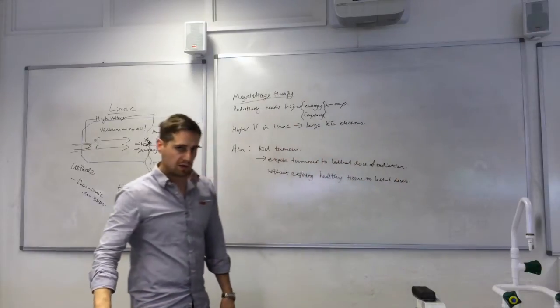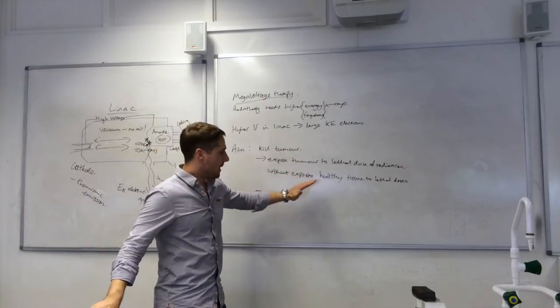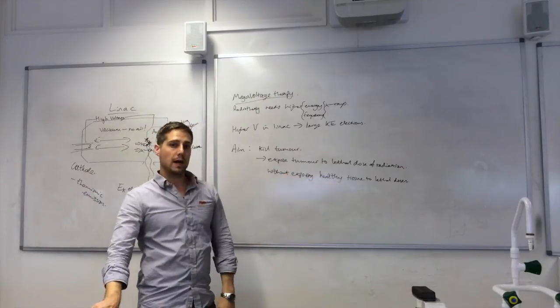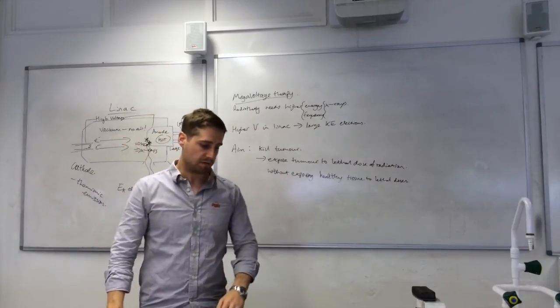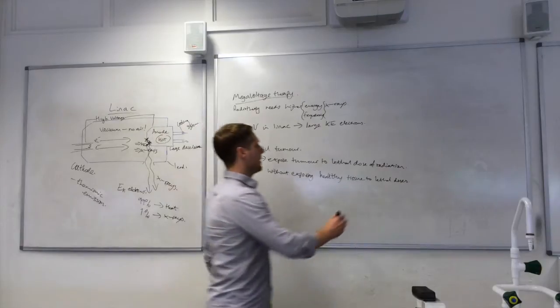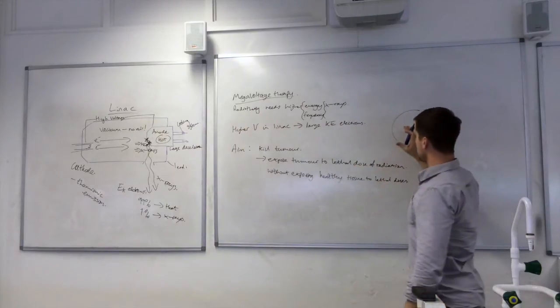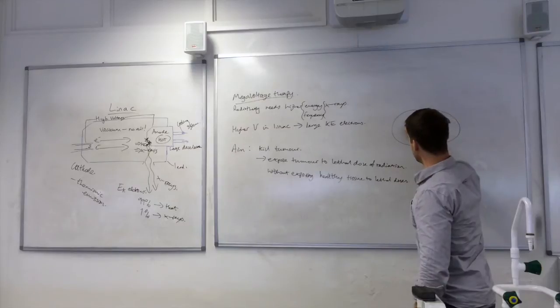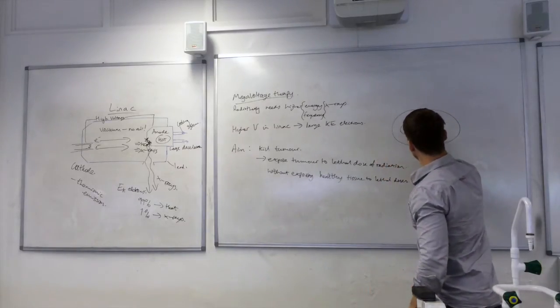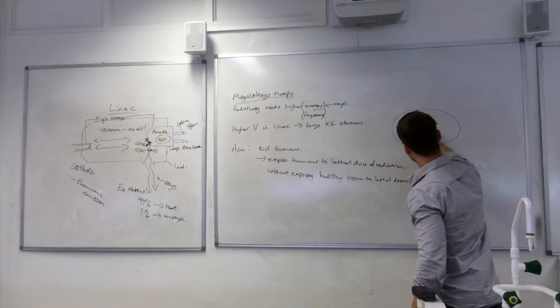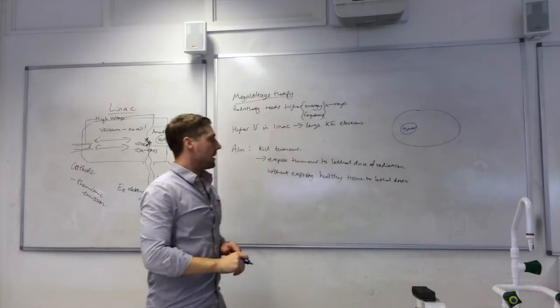So, we want to give the tumour a lethal dose of radiation, but we want all the healthy tissue in the body to only receive a dose that it can survive. No more than what it can survive. So, we want to expose that tumour without exposing healthy tissue to a lethal dose. We want that to receive a dose that it can survive. So, how do we do that? This is a cross-section of the patient where the tumour is, and here's our tumour here. Not drawn to scale, but there's the tumour.